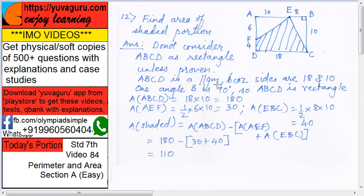6 plus 4, 10 and 10 over here. So sides are equal. ABCD is a parallelogram because sides are 18 and 10. That is proven now. In a parallelogram, when one angle is 90 degrees, this full parallelogram becomes a rectangle. That's why now you can say that ABCD is a rectangle. Always when something is not given, you have to first prove it.